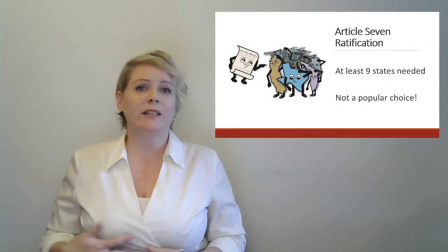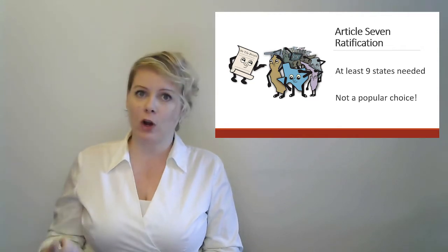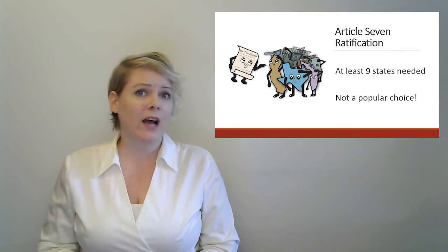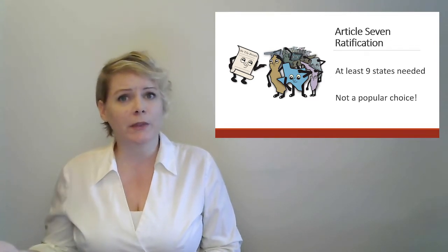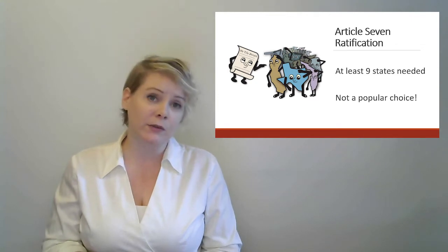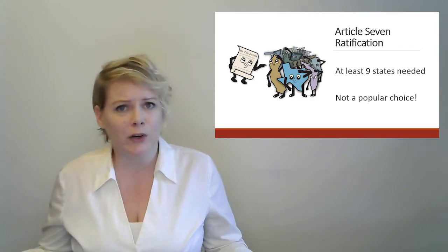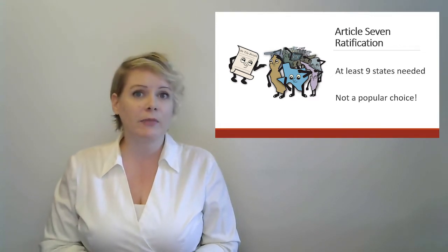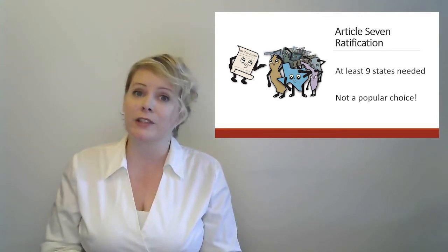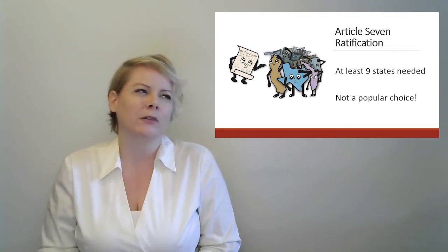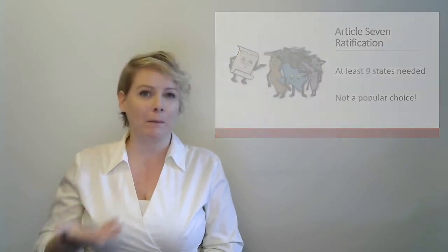Article Seven, the last article, establishes how to make the document official. Once they finished and voted that they liked it, they needed all the states to ratify it. There were 13 states, but they only required nine to ratify — because it was not that popular. A lot of people disagreed with parts of the Constitution, didn't like specific wording, or wanted to nitpick details. So they decided only nine of thirteen had to ratify it. Even then it took a pretty long time — partly because you had to take the physical copy around to each state, and it took a long time to get to Georgia.